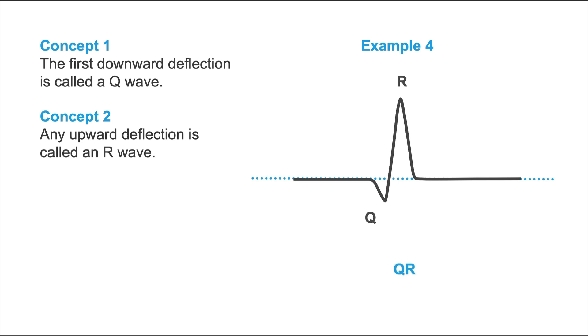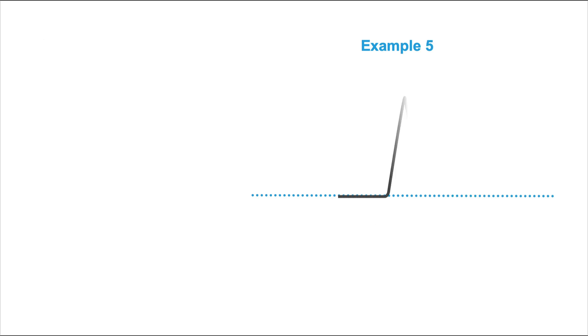Are you ready for some more examples? Well, here we go. Example number five. Again, pause the video and try for yourself. That was simple, wasn't it? There's only one concept that you have to use here. And that's concept number two. Any upward deflection is called an R-wave. But let me tell you one thing. This type of R-wave is usually quite rare. Usually, we would see a Q-wave here or an S-wave here. So you will only rarely see this type of pattern.